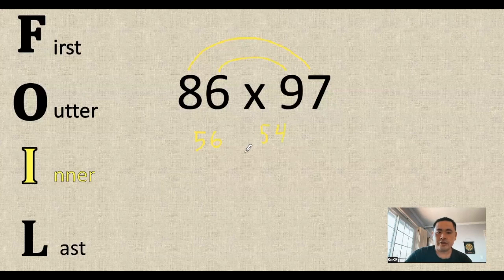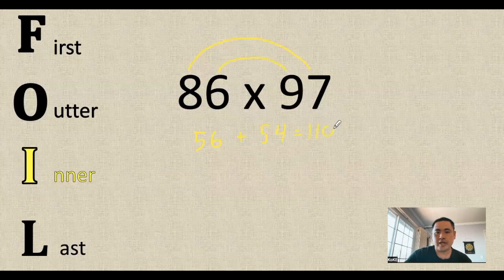And the trick with these two numbers is that we need to add them together. So when we do that, we get a total of 110. And I'm going to actually write that number nice and big on the right.